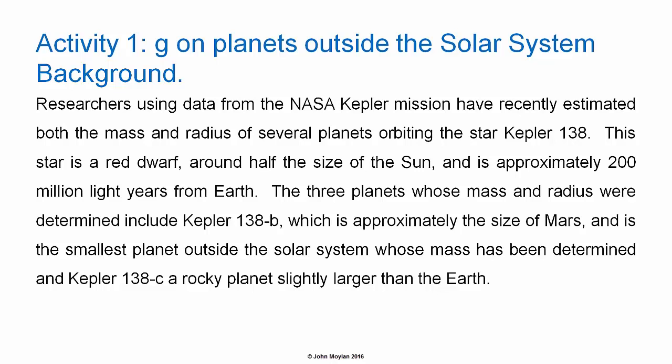Just to start, a bit of background. Researchers using data from the NASA Kepler mission have recently estimated both the mass and radius of several planets orbiting the star Kepler 138, a red dwarf around about 200 million light years away from the Earth. The planets include Kepler 138 b, approximately the size of Mars and the smallest planet outside the solar system whose mass and radius have been determined to date, and Kepler 138 c, a rocky planet slightly larger than the Earth, classified as a super Earth. Both planets orbit their star too close for liquid water to form on the surface, so while they're not candidates for life, they are both terrestrial planets.